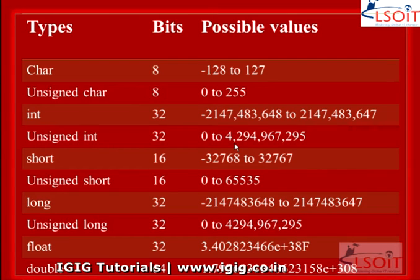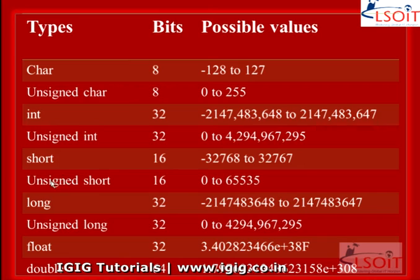This chart gives you an idea of different data types in the Microsoft C compiler. C does not have that many data types — they are pretty simple. We can see that char is 8 bits and stores values from -128 to 127. Unsigned char is 0 to 255, also 8 bits. Int is 32 bits, unsigned int 32, short 16, unsigned short 16, long 32, unsigned long 32, float 32, double 64, and long double 64.